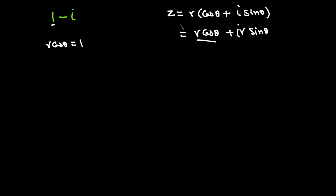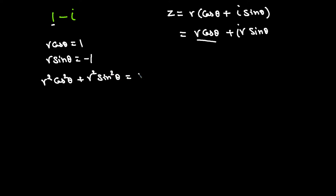Comparing the imaginary parts, R sine theta equals negative 1. Now I'll square and add both equations: R² cos²theta plus R² sin²theta equals 1² plus (negative 1)². Taking R² as a common factor, inside we're left with cos²theta plus sin²theta equals 1 plus 1, which is 2.